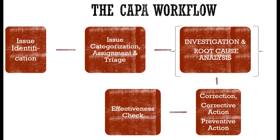This would generally be followed by issue triage, categorization, and assignment. The breadth, scope, and impact of the issues would first be determined, and accordingly it would be categorized as a major, critical, or minor CAPA — or any other similar levels that exist in your organization's quality management system — and then it would be assigned to specific personnel.